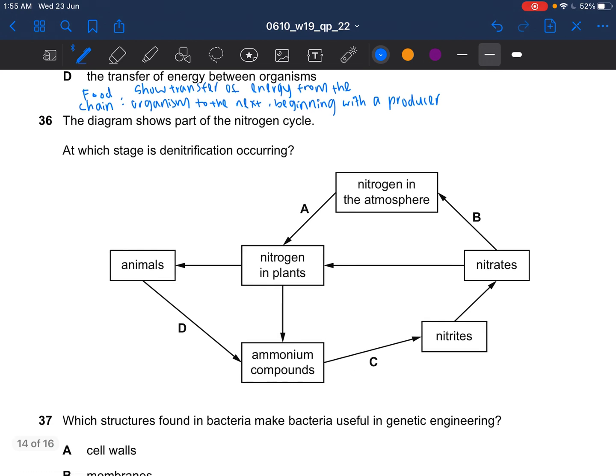Next question, the diagram shows part of the nitrogen cycle. At which stage is denitrification occurring? Denitrification is when nitrates are converted to nitrogen. So the answer would be B. A seems to be nitrogen fixation. C seems to be nitrification. So the answer for question 36 would be B, nitrates to nitrogen in the atmosphere.